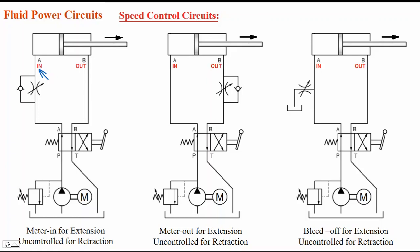For extension, port A is the inlet — we supply oil here — and port B of the cylinder is the outlet. The head-end port is inlet, rod-end port is outlet. When we supply oil to the inlet, the cylinder extends and oil on the other side of the piston comes out. In the meter-in circuit, the flow control valve is placed such that oil going into the cylinder flows through it. During retraction, oil coming out flows through the check valve — reverse free flow.